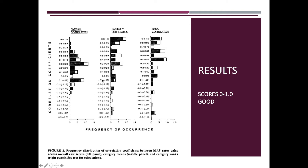These are the results — correlational data you won't see very often in behavioral analytic research. At zero there is no correlation; going negative is a negative correlation; toward one is a positive correlation. Scores close to positive one are good. You see that reliability is pretty variable in overall scores per category of question and rank order — what function is coming up highest. The scores are generally pretty good, particularly category correlation and rank correlation, so the MAS was looking pretty good on that initial analysis.